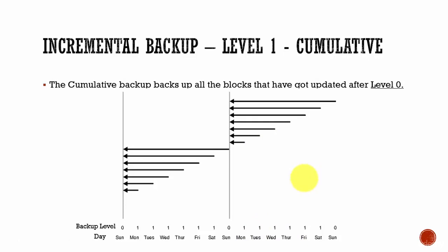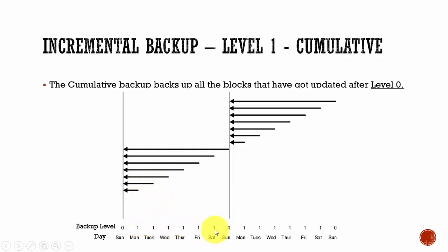Now let's see how a cumulative backup works. On Sunday, the level 0 happens where a full backup is taken. On Monday, it takes the backup of all the changes which happened from level 0. On Tuesday, it will take all the blocks that have changed since level 0. Whenever level 1 is performed using the cumulative method, it will backup all the data blocks that have been changed since the last level 0 backup. On the next Sunday, the level 0 happens again, and from Monday, the cumulative backup takes the backup of all data blocks that have changed since the last level 0.